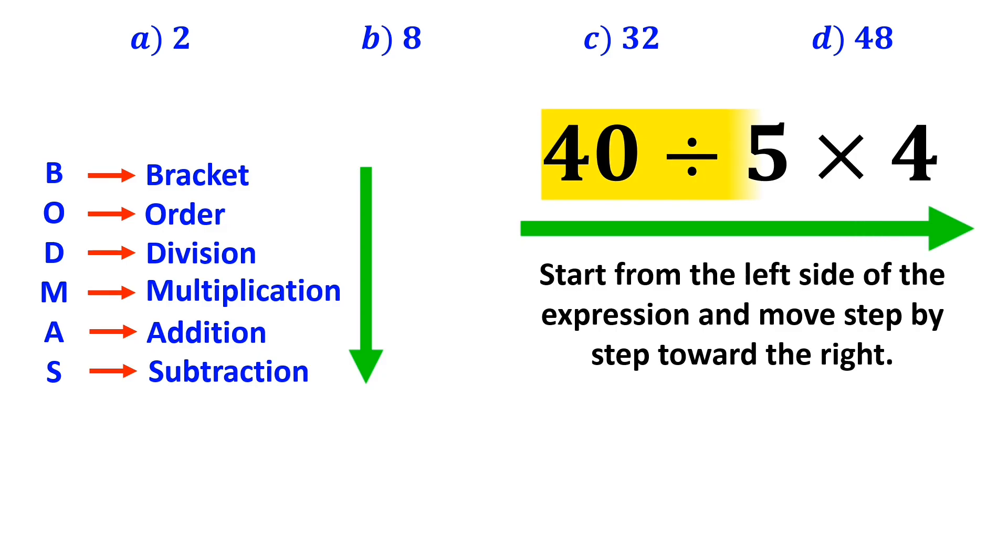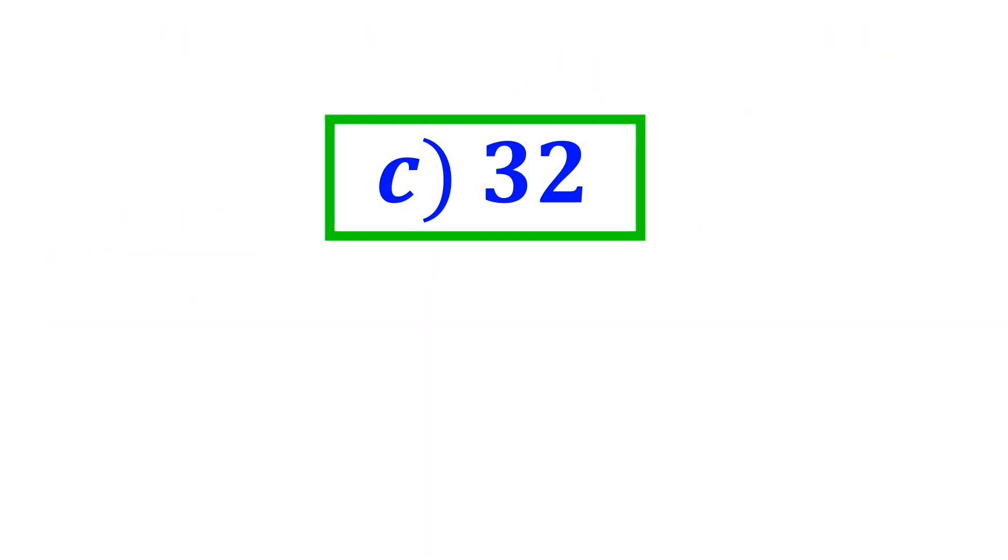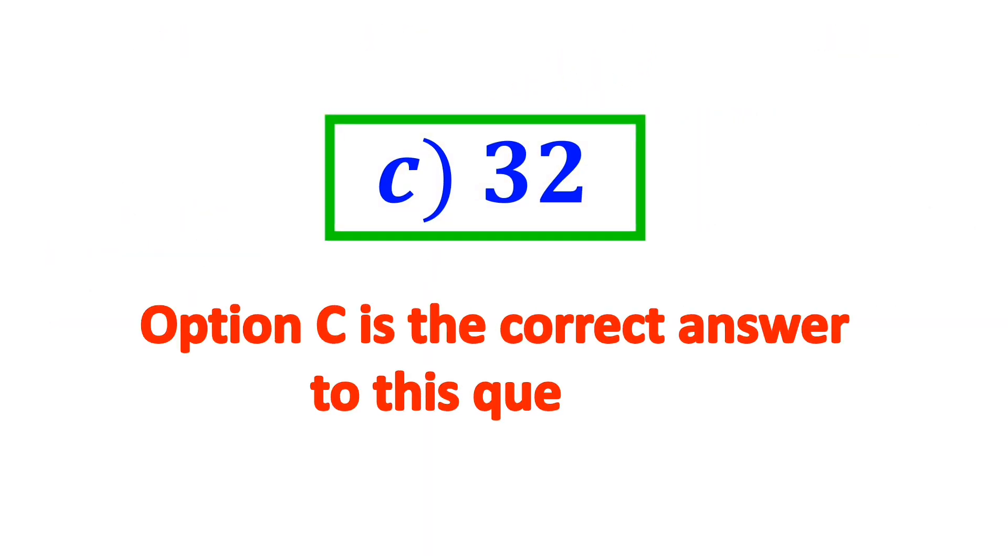So, first we perform the division between 40 and 5, which simplifies the expression to 8 multiplied by 4. Finally, the value of this expression will be 32. Therefore, option C is the correct answer to this question.